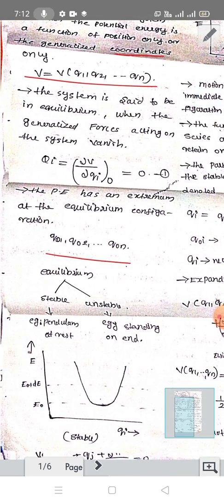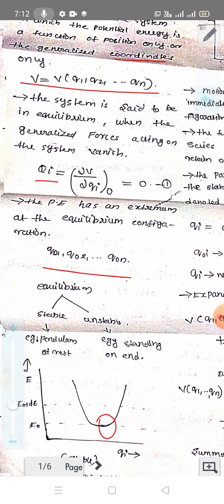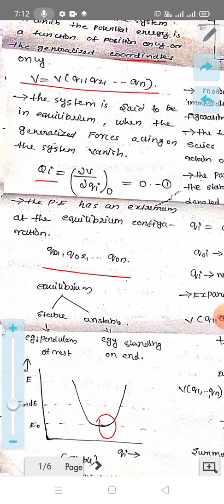The condition is: ∂V/∂qi at equilibrium equals zero. This is the condition for the generalized force at the equilibrium point. That is, the potential energy has an extremum — specifically a minimum — at the equilibrium configuration. If the potential energy has a maximum, then any disturbance will cause the system to move away from equilibrium.